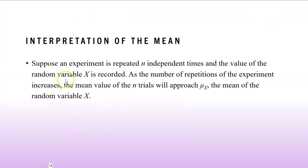The interpretation of the mean says suppose an experiment is repeated n independent times and the value of the random variable is recorded. So you repeat this experiment and each time you're recording the value of the random variable. For instance, if a survey was given to ask people how many marriages they were involved in, that represents your n, however many times you give that survey out.